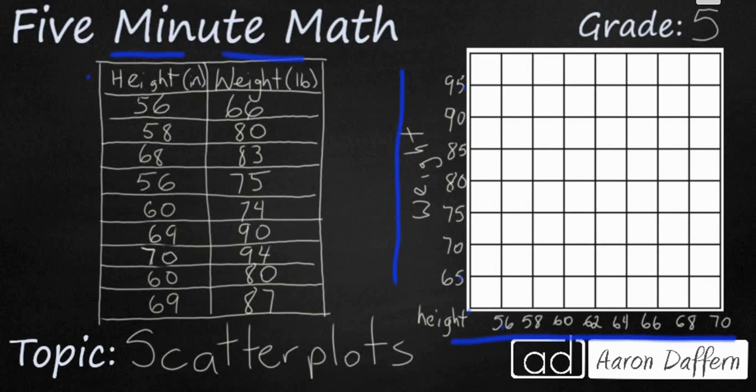So what we are going to do is we are going to plot these points and put them on our coordinate grid. Let's go ahead and put them on first. So 56 and 66. 56 is right here and 66 is just a hair above 65. So we are going to put that right there. And then 58 and 80. What we are doing is we are trying to put these on as close as we can. We are not necessarily looking at precision because these are going to be scattered all over the place. That is why it is called a scatter plot.